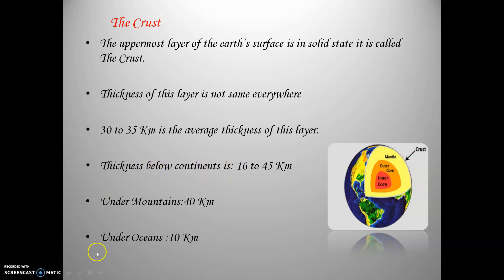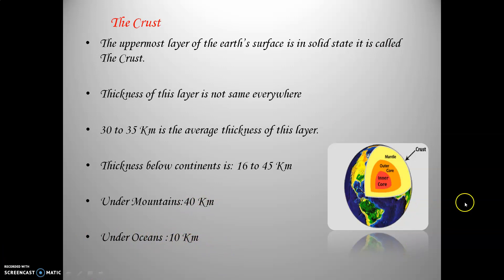The thickness below continents — all countries and land areas — is 16 to 45 kilometers. Under mountains, it is 40 kilometers, and under oceans, it is only 10 kilometers. So the thickness of this particular layer is different depending on location: 16 to 45 kilometers below continental areas, 40 kilometers under mountains, and 10 kilometers under oceans.